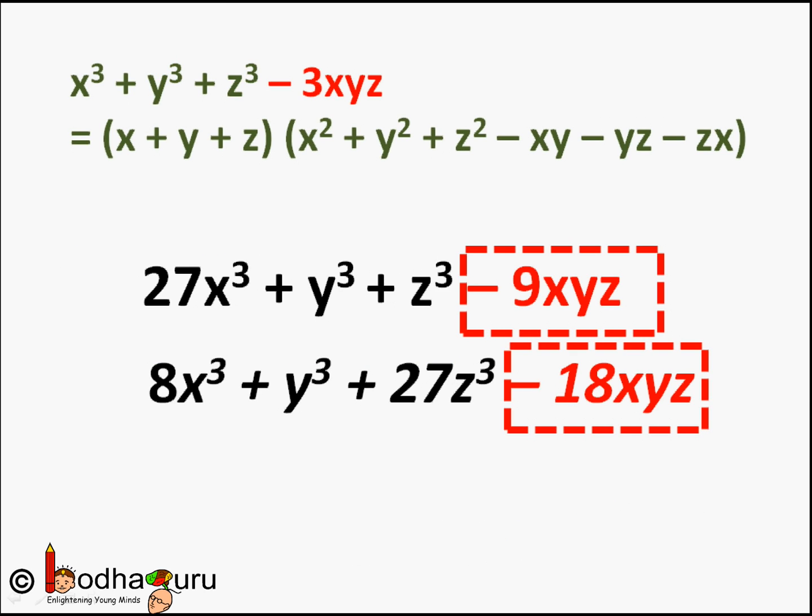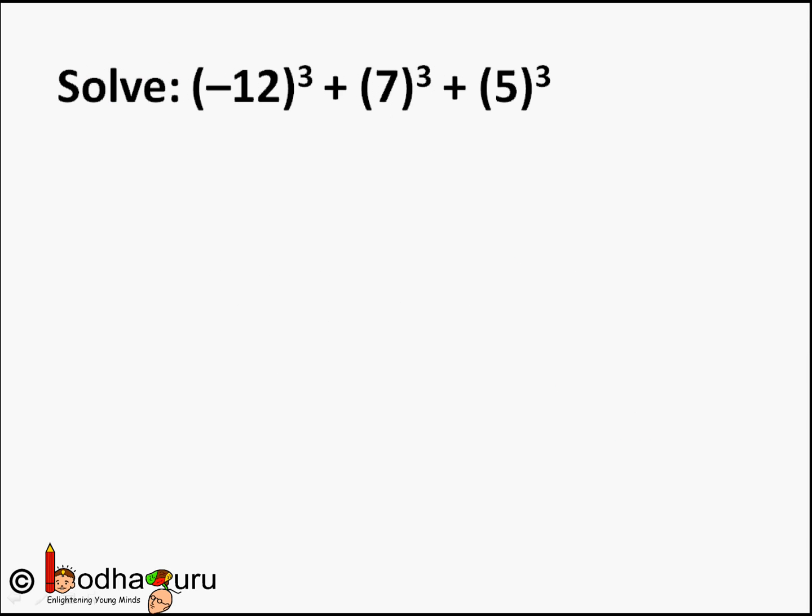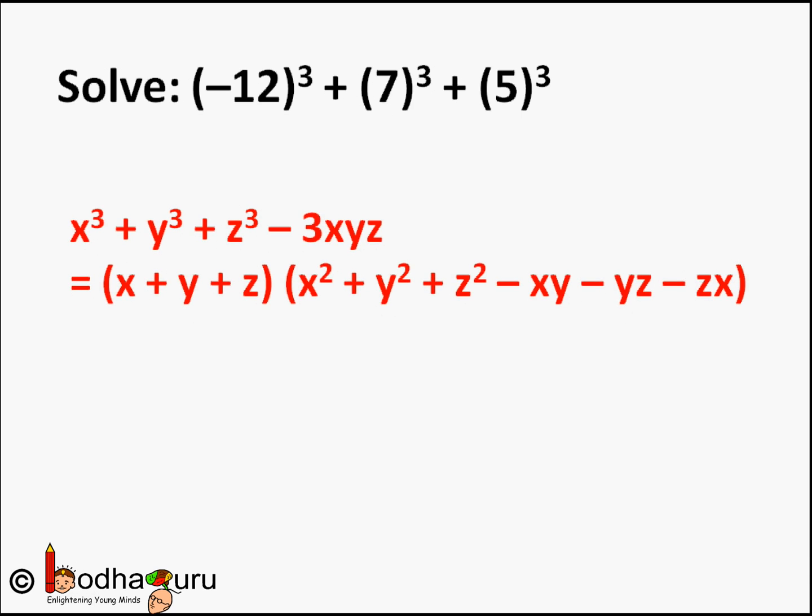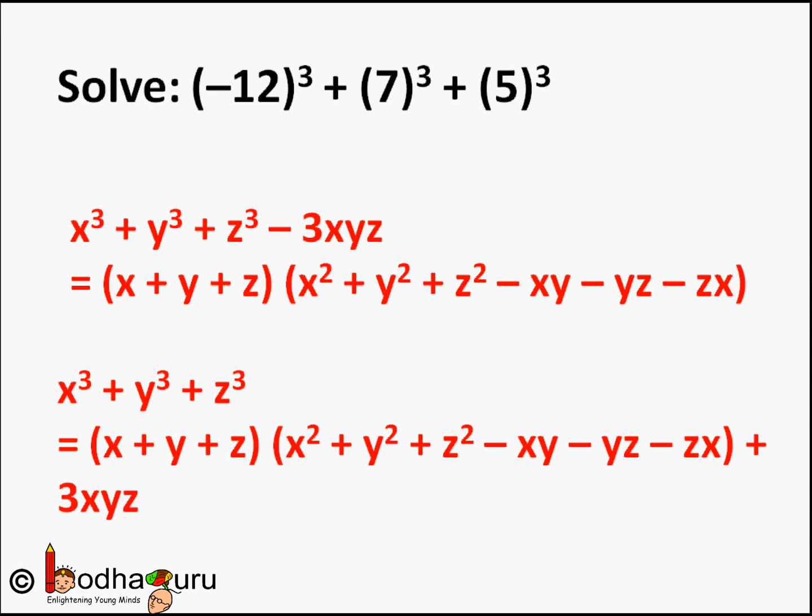Without actually calculating the cubes, find the value of this expression: (-12)³ + 7³ + 5³. We can use the same identity here also, with -12 as x, 7 as y, and 5 as z. How? Because this identity has four terms—x³ + y³ + z³ - 3xyz—whereas the problem has three terms only. So what we can do: take 3xyz to the other side.